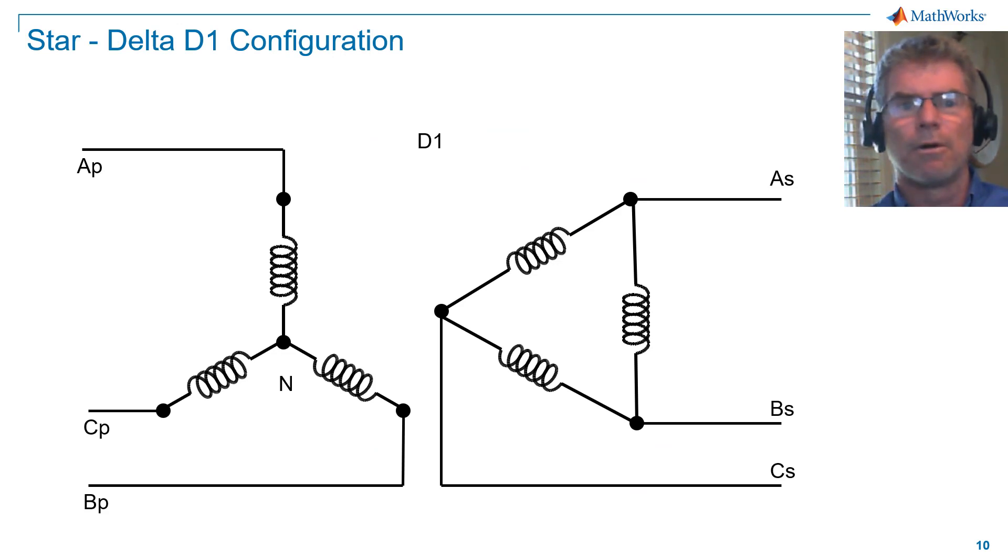Here we see a circuit diagram of a star delta transformer with the delta configured as D1. So what does that mean? Well, if we look at the voltage across AB on the primary and the voltage across AB on the secondary, and bring those vectors together like hands on a clock face, and assume that the primary line voltage points to 12, then the secondary line voltage points to 1, hence D1.